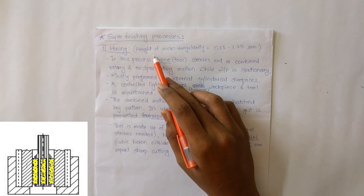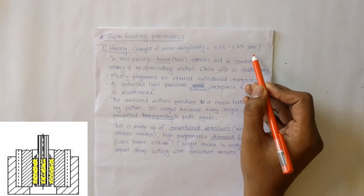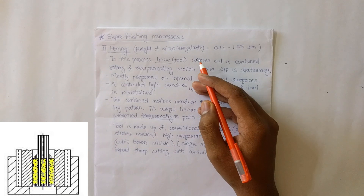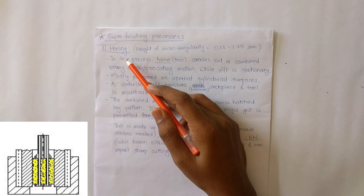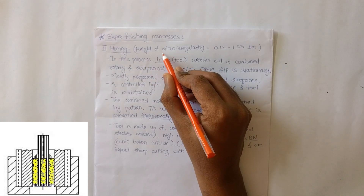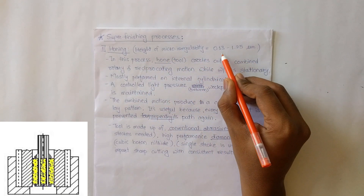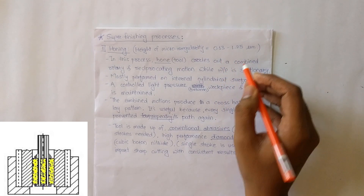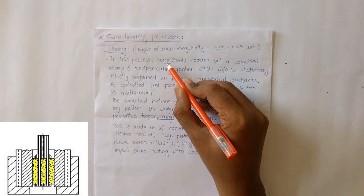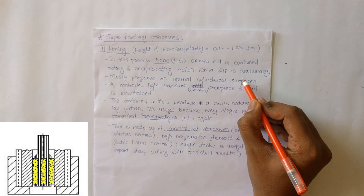In the honing process, the height of micro irregularities is 0.13 to 1.25 micrometers. This height of micro irregularity means the flatness or accuracy of the flat surface after this honing process. A tool named hone carries out a combined rotary and reciprocating motion while the workpiece is stationary.